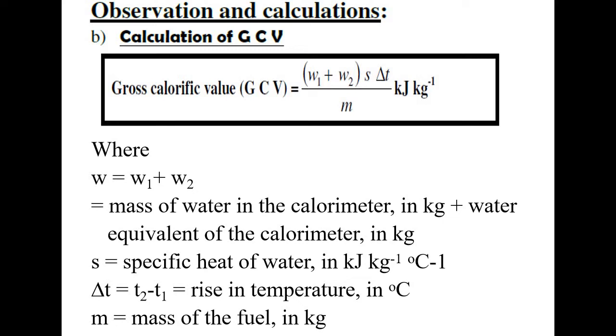Gross calorific value GCV equals W1 plus W2 times S times delta T divided by M. All these terms have their own significance and each term was explained in the previous class. For recalling all those things you better play that video and find out what each term corresponds to and accordingly substitute in the formula.